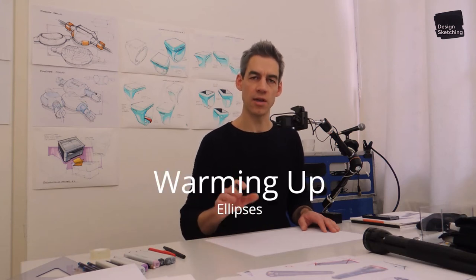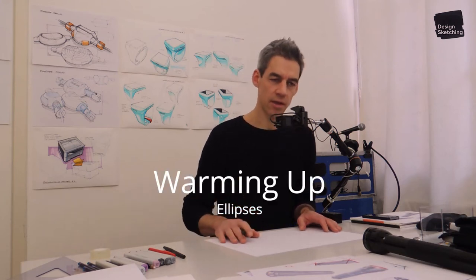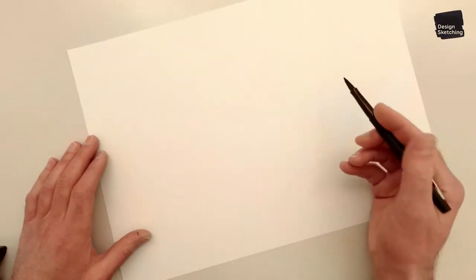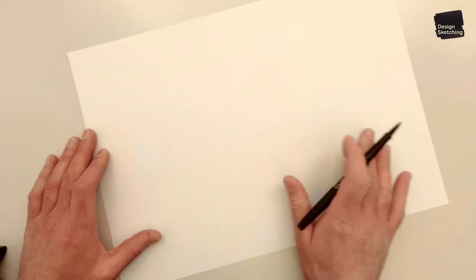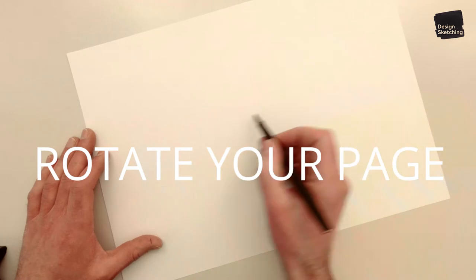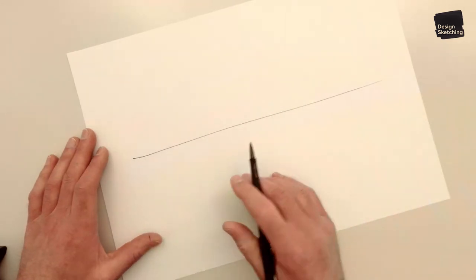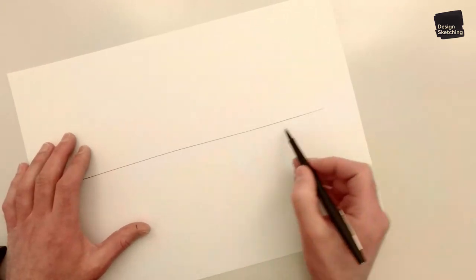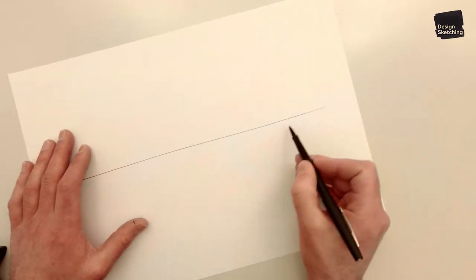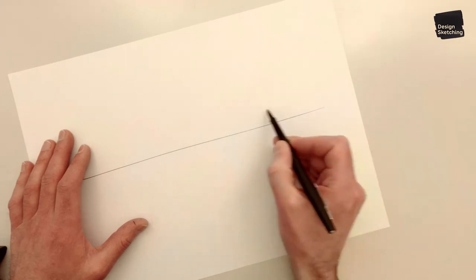So here's a little warming up exercise to do ellipses. And just like drawing straight lines, it's easier to rotate the page a little bit because this direction feels more natural for drawing your lines. And it's the same with the ellipses. So find a position that enables you to draw your ellipses more fluent.